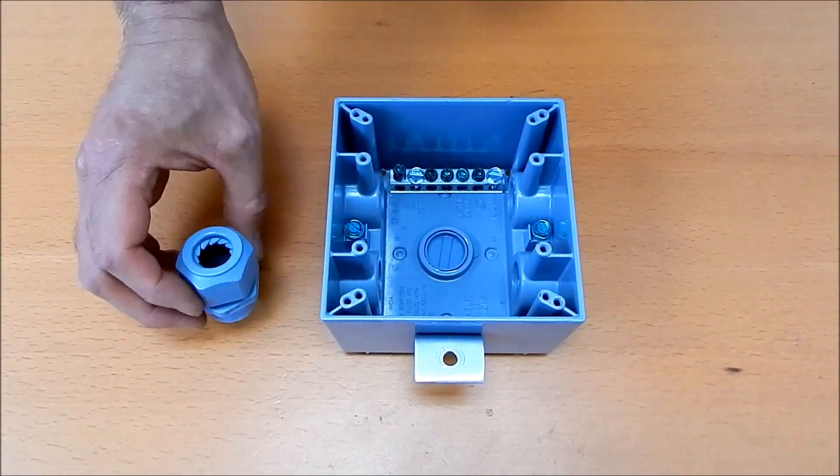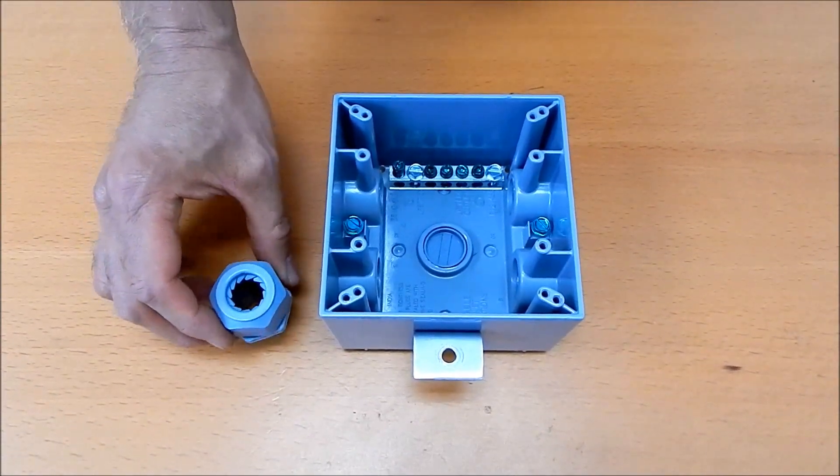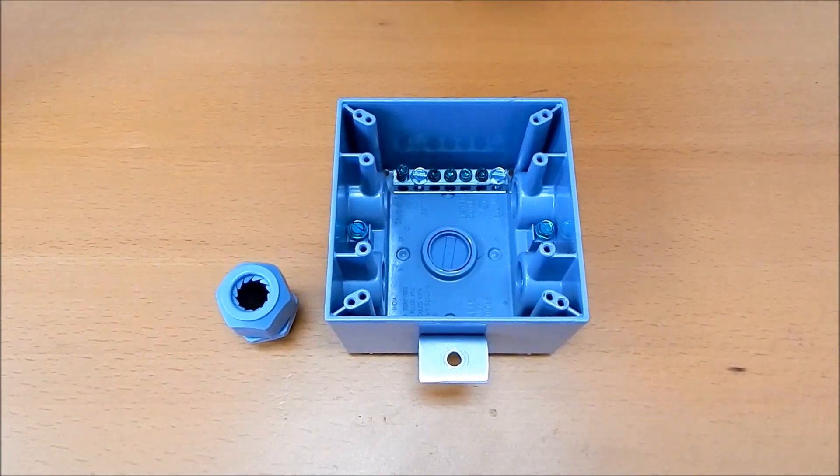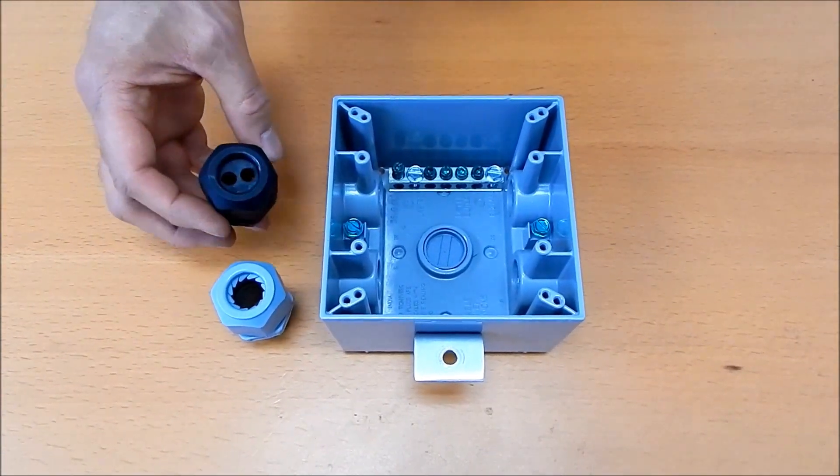However, the thing you want to do is like for an AC trunk cable, for microinverters, you want to use this type of strain relief. And then if you've got PV cable for a DC run, then you want to use these.